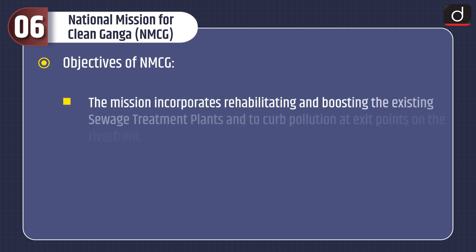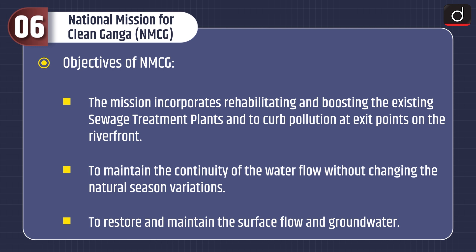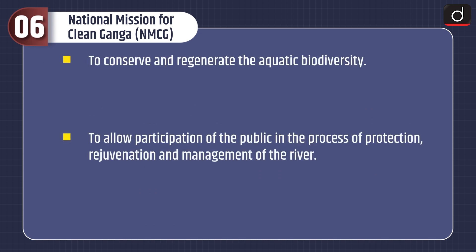The objectives of NMCG include rehabilitating and boosting existing sewage treatment plants and curbing pollution at exit points on the riverfront. It aims to maintain continuity of water flow without changing natural seasonal variations, to restore and maintain surface flow and groundwater, to conserve and regenerate aquatic biodiversity, and to allow public participation in the process of protection, regeneration, and management of the river.